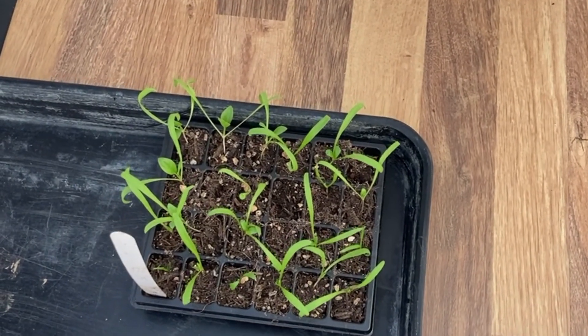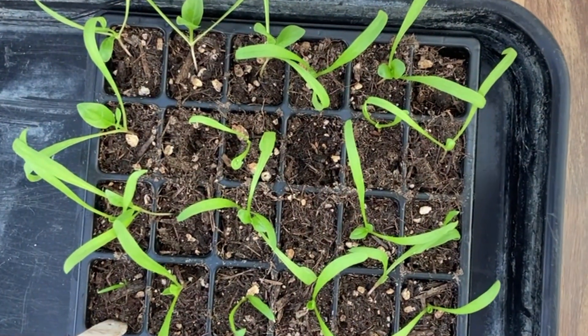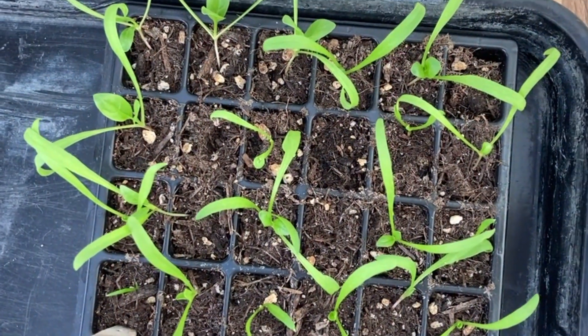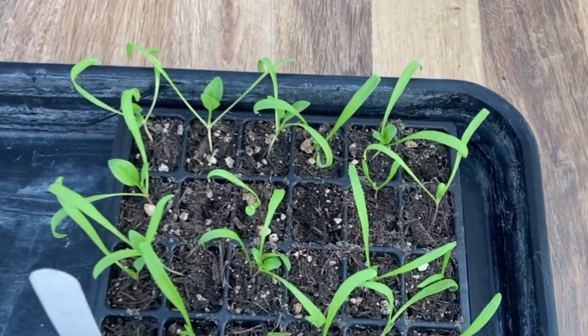This is the spinach that I sowed last month. This is Matador and it's pretty good and strong now, so I think it's ready to move on and be either potted up in the greenhouse or under a cold frame in the garden.